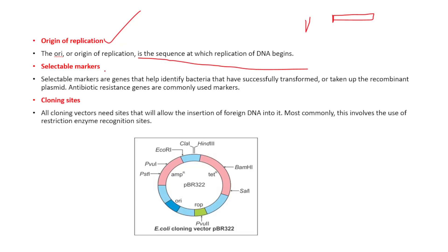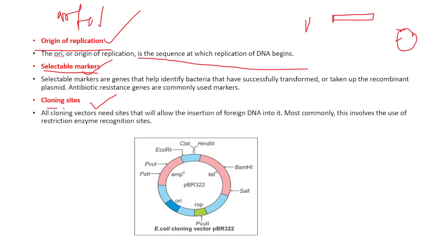Selectable markers are used to identify the recombinants. We should have selectable markers and cloning sites. All cloning vectors need sites that will allow the insertion of foreign DNA. If there is a cloning site, we can insert foreign DNA. So the essential components are: origin of replication, selectable markers, and cloning sites.